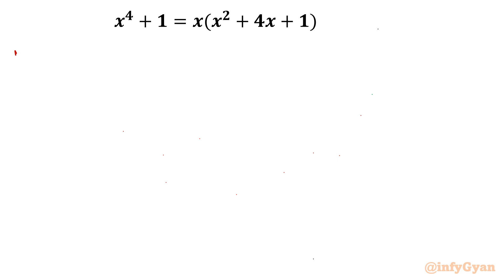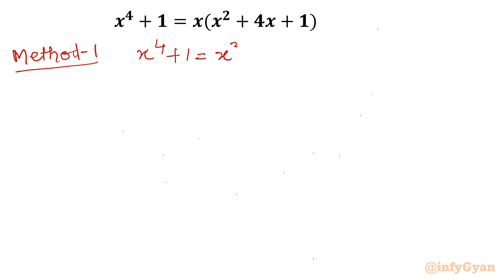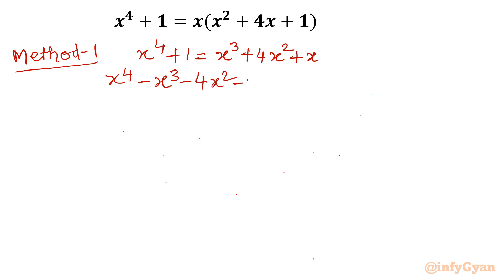So I will write here Method Number 1. I will write x⁴ + 1, and multiplying out the right side gives x³ + 4x² + x. Taking all terms to the left hand side: x⁴ - x³ - 4x² - x + 1 = 0.